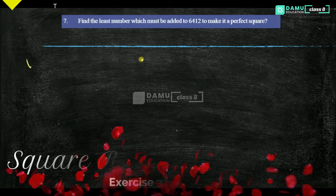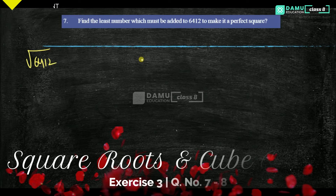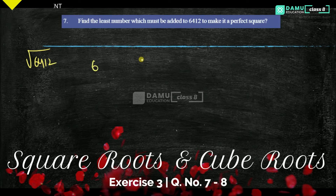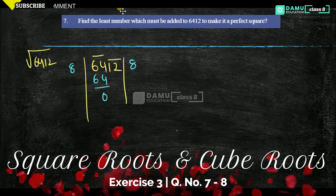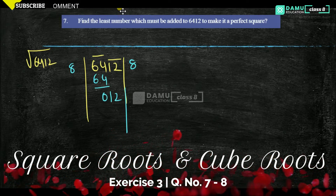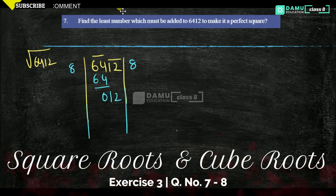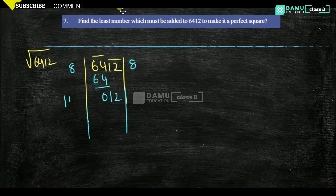Let's find whether 6412 is a perfect square or not. Taking 64 and 12 as groups, 8 eights are 64, so we get remainder 12. Here the quotient digit is 8, and 8 twos are 16, then we are getting 12.